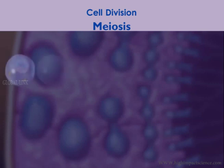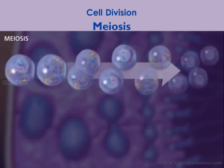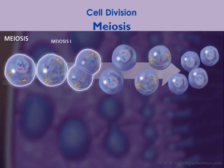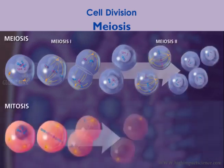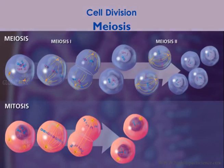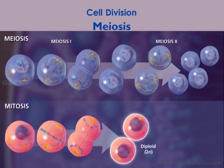In order to reduce the chromosome number by half, two successive rounds of division are required. These divisions are called meiosis 1 and meiosis 2. Although the processes of meiosis and mitosis look similar, there are a few differences. The obvious difference is that mitosis results in two diploid daughter cells, while meiosis results in four haploid daughter cells.